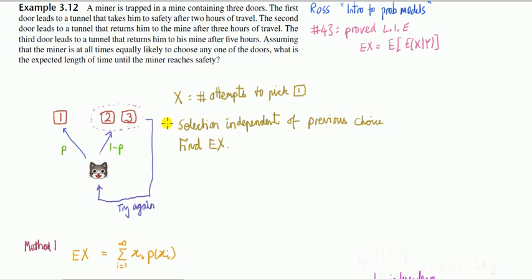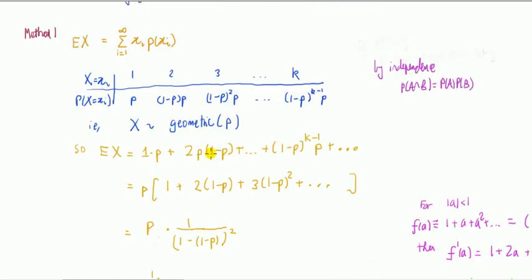We want to find the mean number of attempts to pick door one. What's the mean number of goes before the game ends? Let X denote the number of attempts to pick door one.